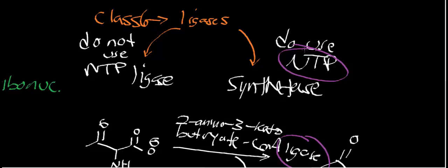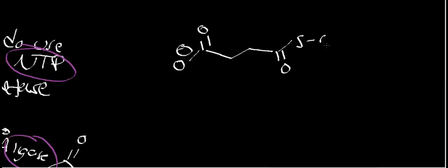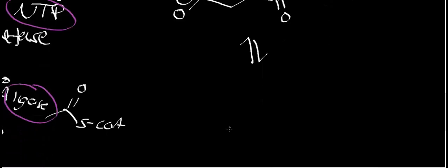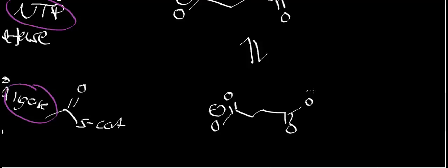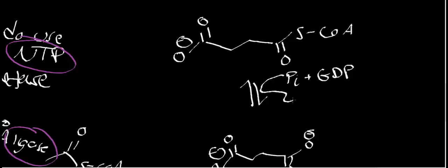A synthetase, on the other hand, does use a nucleoside triphosphate. Generally when you say it's using a nucleoside triphosphate, it's not that it's forming one — it's that it's burning it. Synthetases are condensation reactions that occur using a nucleoside triphosphate. So for succinyl-CoA synthetase, in the forward direction: starting with succinyl-CoA, you need inorganic phosphate plus GDP, and out comes GTP and coenzyme A. This is our generic reaction for succinyl-CoA synthetase.